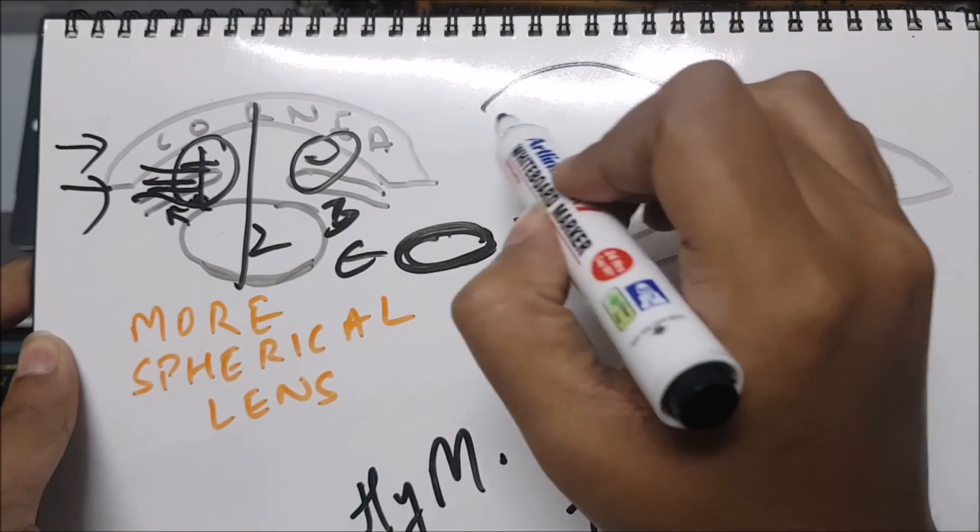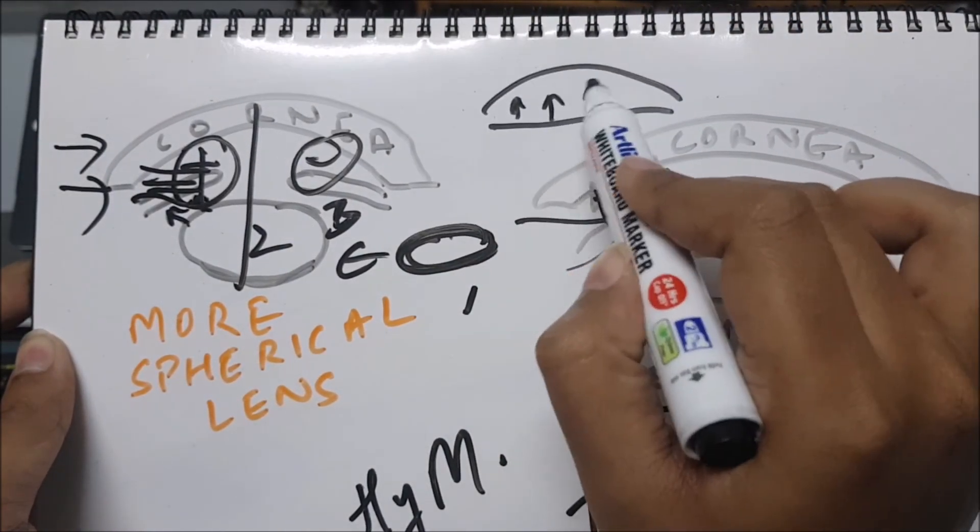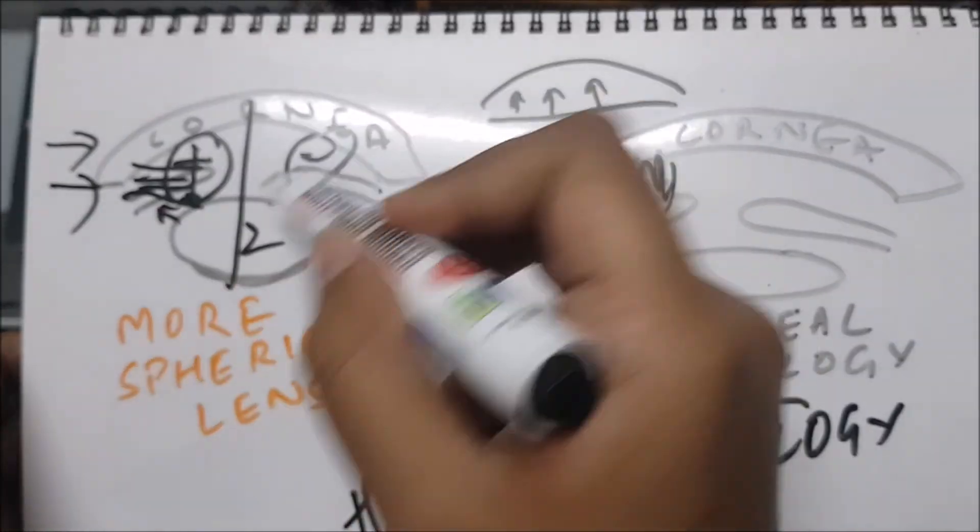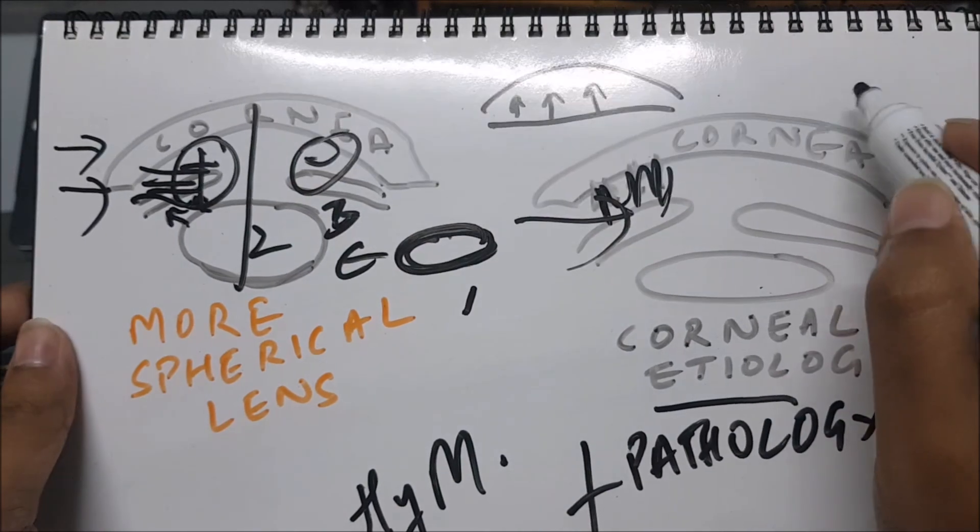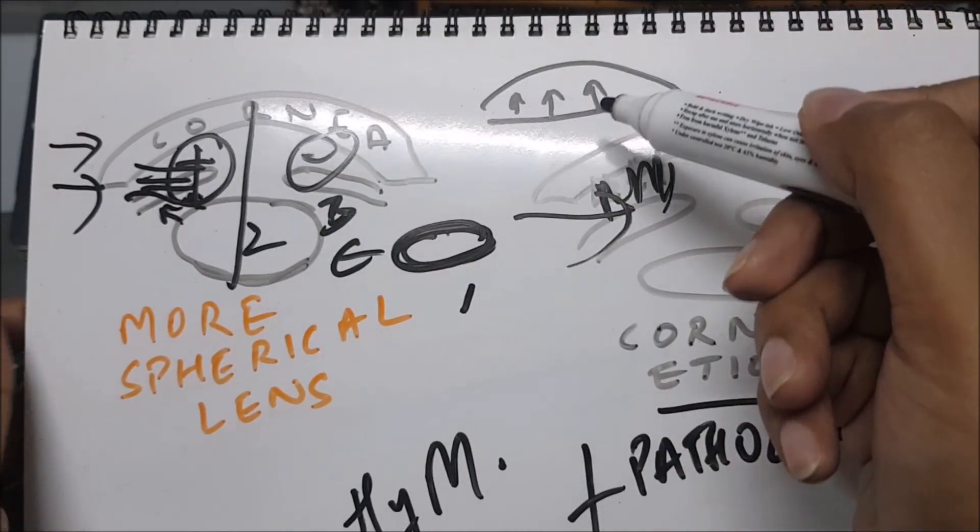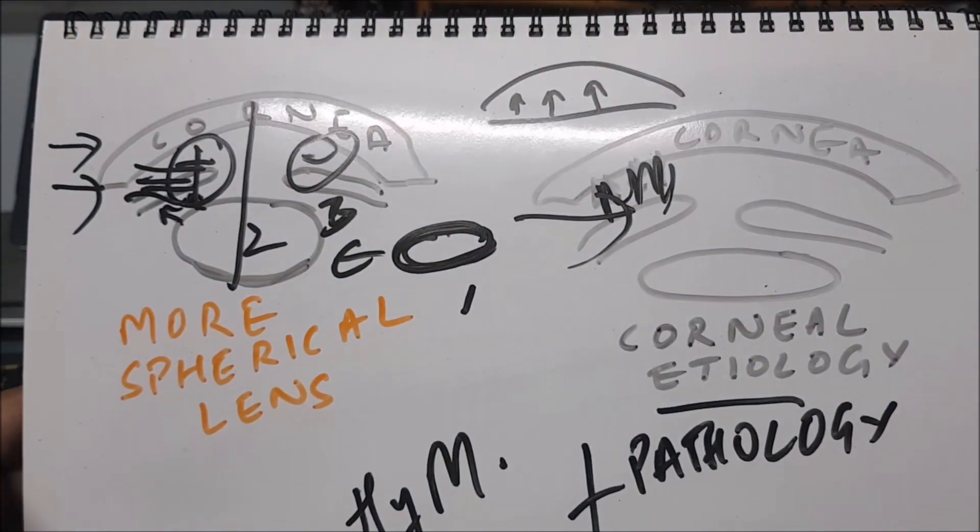It's not the anterior chamber depth per se in total. It's not that everything is shallow everywhere. It may be due to a more spherical lens, so some part of the iris may be obstructing. Different pathologies may affect central depth or peripheral depth. I hope I made myself clear. Thank you for viewing this video, goodbye.